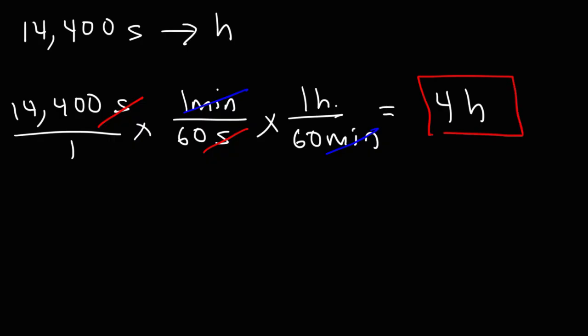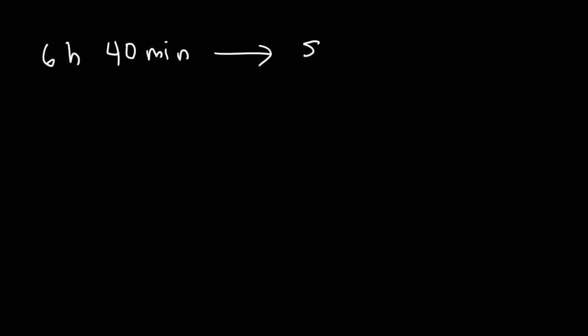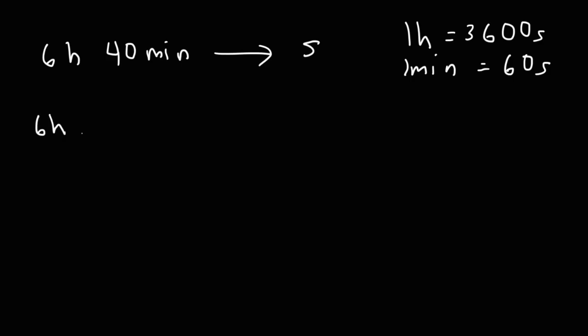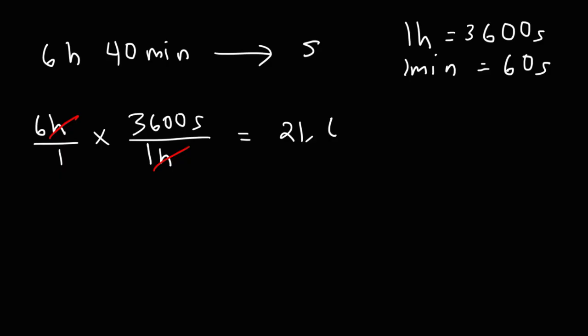It's not too difficult to convert between seconds and hours. Here's a question: if you were given 6 hours and 40 minutes, how would you convert that into seconds? It's helpful to know that 1 hour is 3,600 seconds (60 times 60), and 1 minute is 60 seconds. We convert each part separately. For 6 hours: 6 times 3,600 gives us 21,600 seconds.